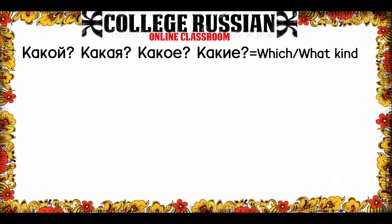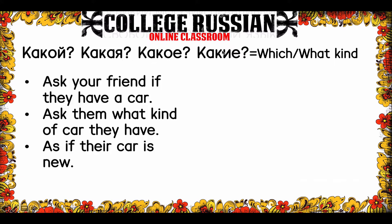The next word you need is the word to say 'which' or 'what kind of.' As you'll notice, there are four forms, and you can probably guess that it needs to change for gender. Какой is how you'd ask about something masculine. Какая, какое, какие.